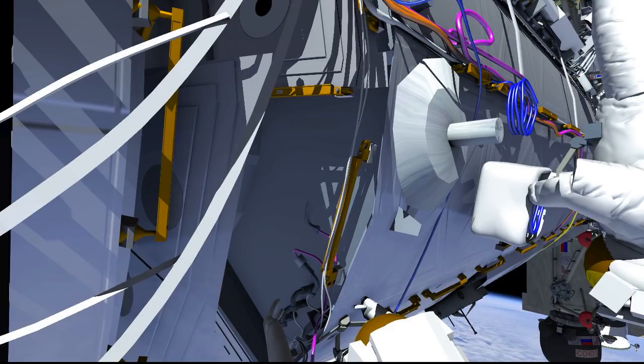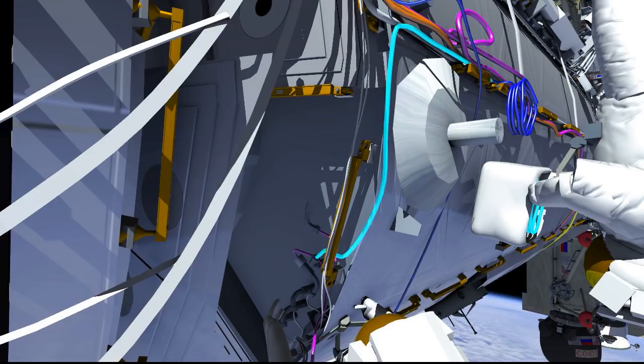EV1 will disconnect a cable, then take the new cable from EV2 and hook it up under the shield. Then they'll replace all the hardware that they previously removed.